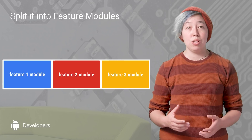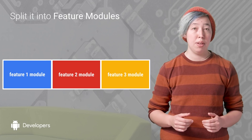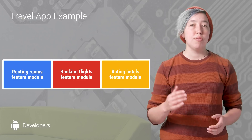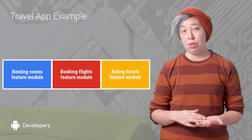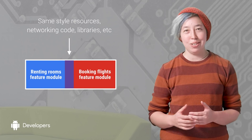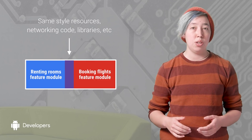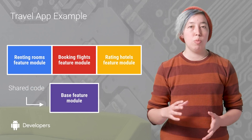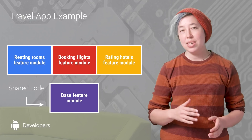Each feature module contains the code and resources for a different, distinct thing that your users could do with your app. For example, let's say that I have a travel app. I might have a different feature module for the code for renting hotel rooms, booking flights, and rating those hotel rooms. Usually, these feature modules won't have completely independent code and resources — you probably use the same themes and utility code in each, and you probably use the support library in all of the feature modules. All of this shared code and resources is therefore extracted out into another module called the base feature module.